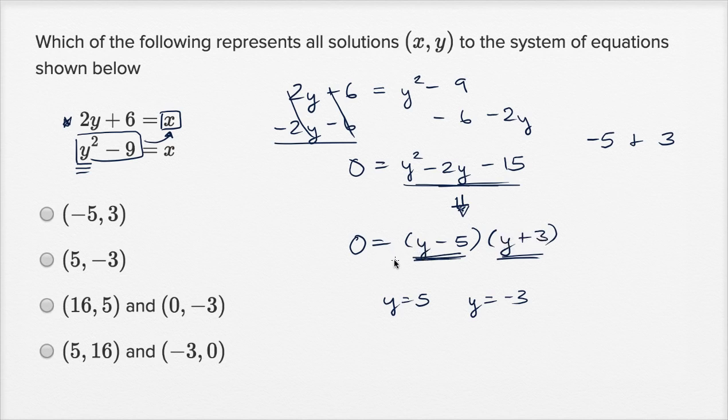Now we could go back and try to solve for the x's, or we could immediately look at our choices and say, I need these choices to have y equals 5 and y equals negative 3 as at least the y coordinates of solutions. And these first two don't even have two choices. But this one right over here, they're actually trying to trick us a little bit because we have this 5 and negative 3, but this isn't y equals 5.